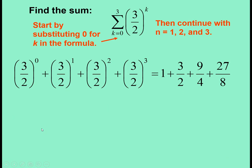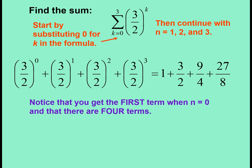So when we put the numbers in, we end up with 3 halves to the 0, 3 halves to the 1st, 3 halves squared, 3 halves to the 3rd, which are these numbers: 1 plus 3 halves plus 9 fourths plus 27 eighths. And notice that you get 4 terms.